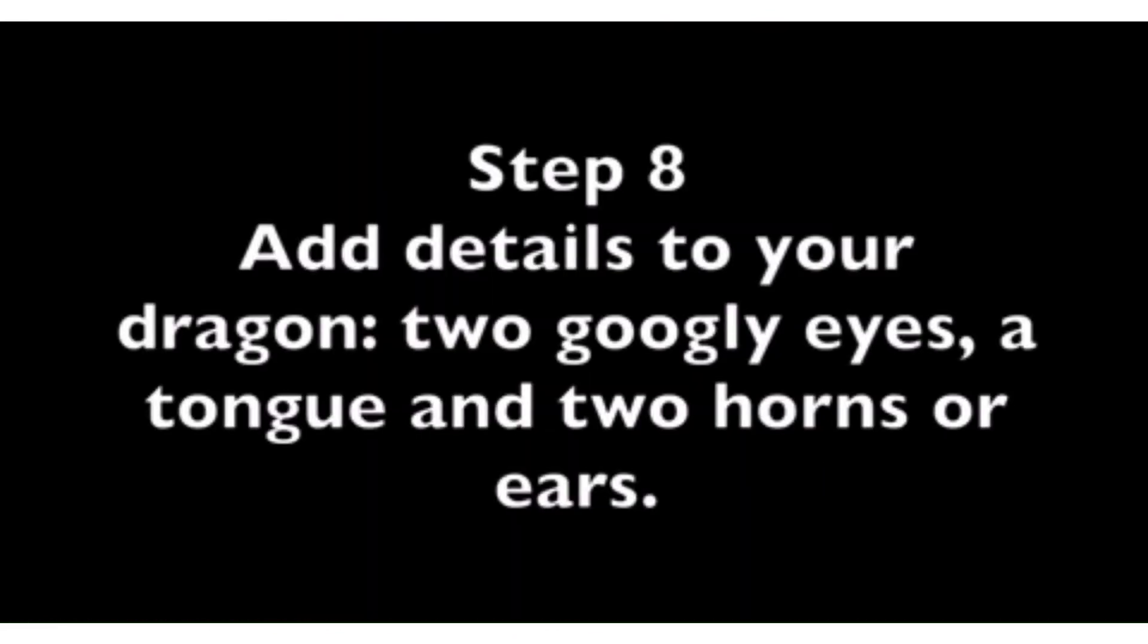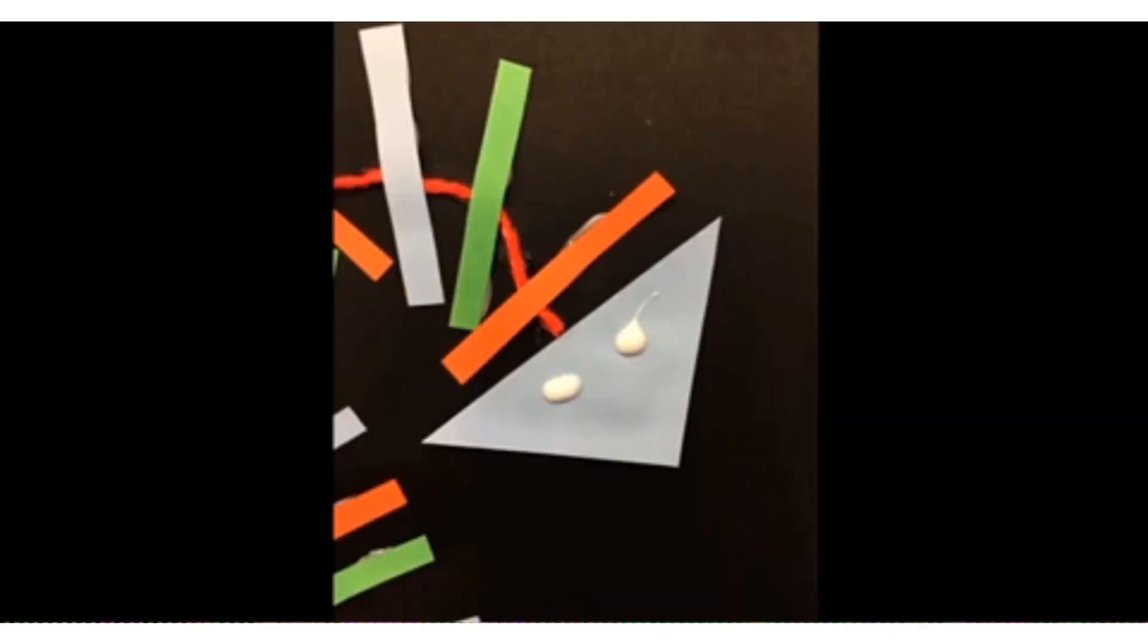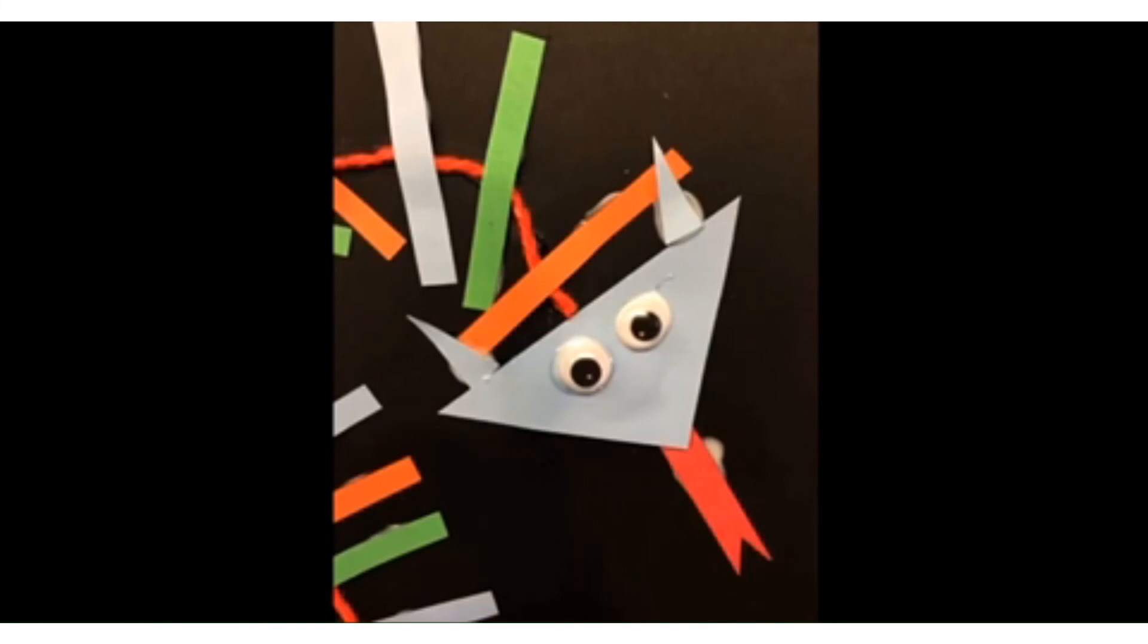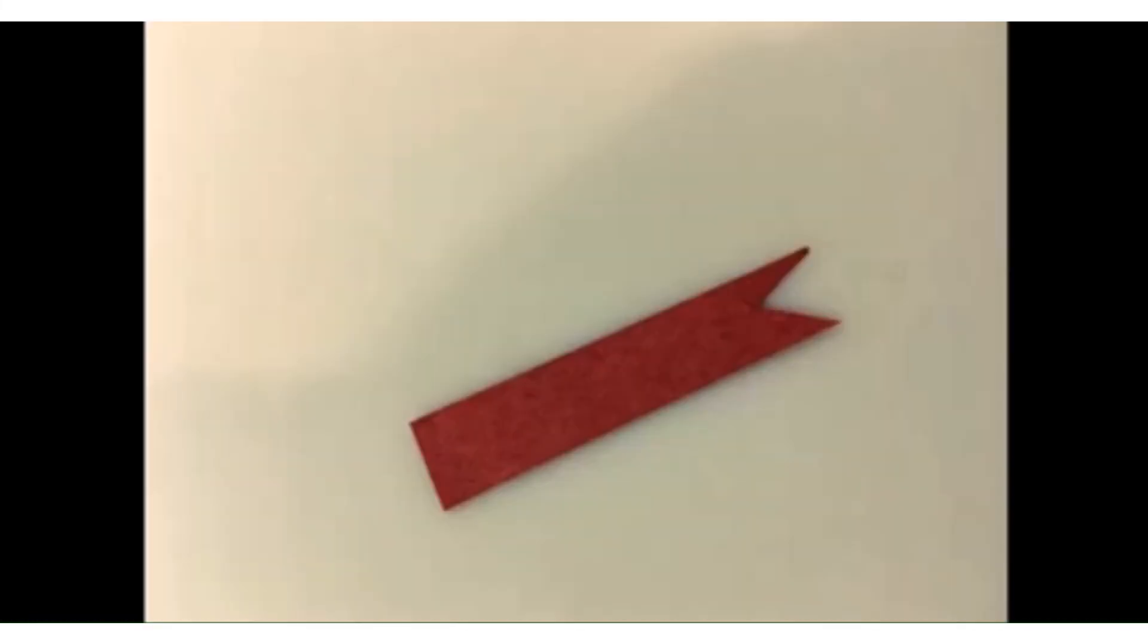Step 8. Now you can add details to your dragon. You can glue two small googly eyes on your dragon's head. You can cut two small triangle type shapes to make horns or ears on your dragon's head. And you can also add a lizard-like tongue if you would like.